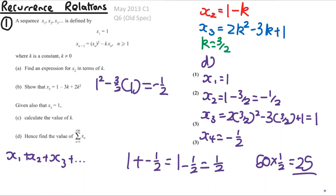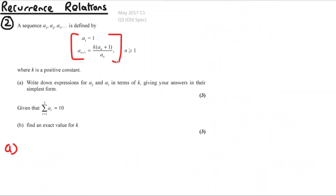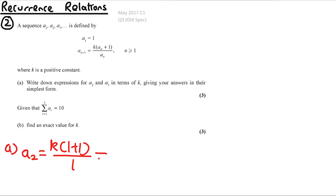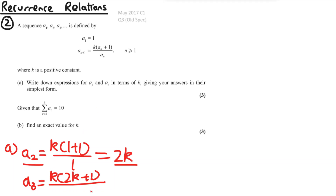For question 2 part (a), given a1 = 1 and the recurrence relation a(n+1) = k(a_n + 1/a_n), we find a2 and a3 in terms of k. Substituting a1 = 1: a2 = k(1 + 1/1) = k×2 = 2k. So a2 = 2k.